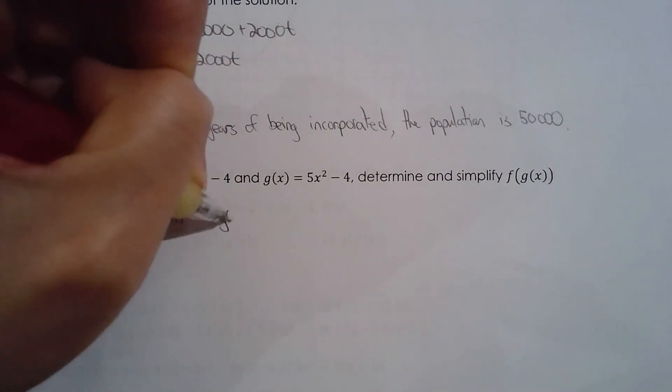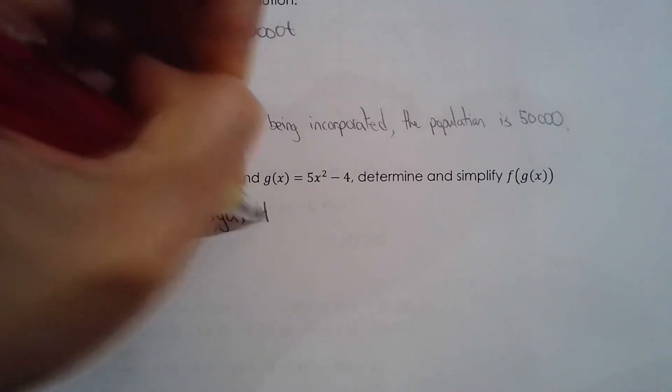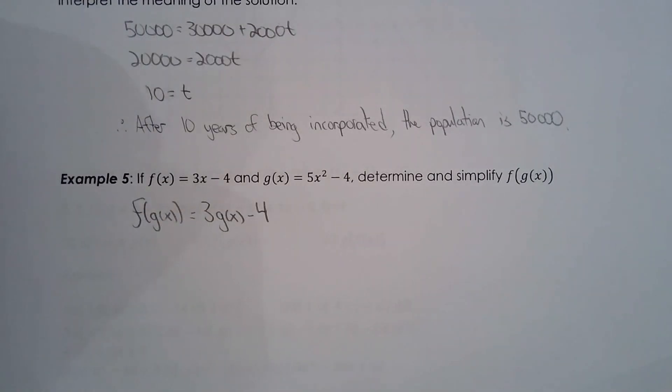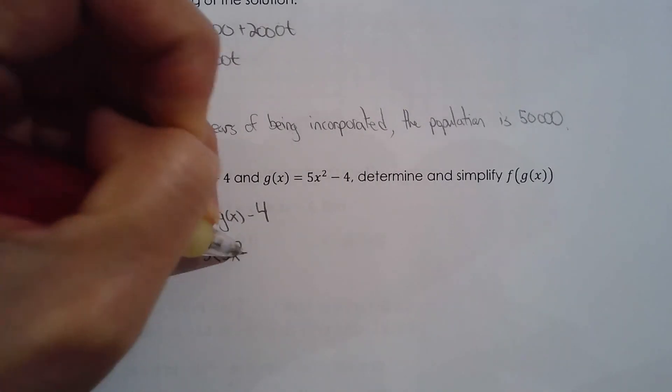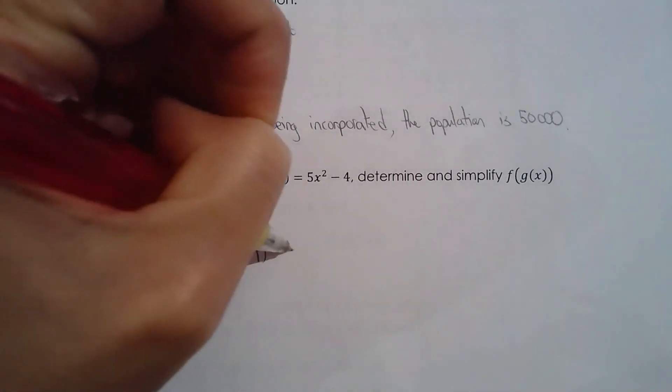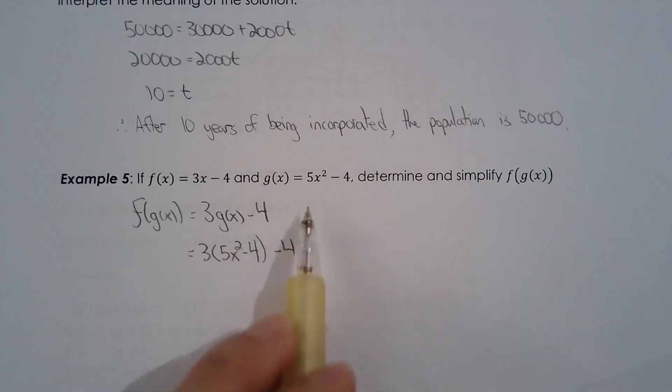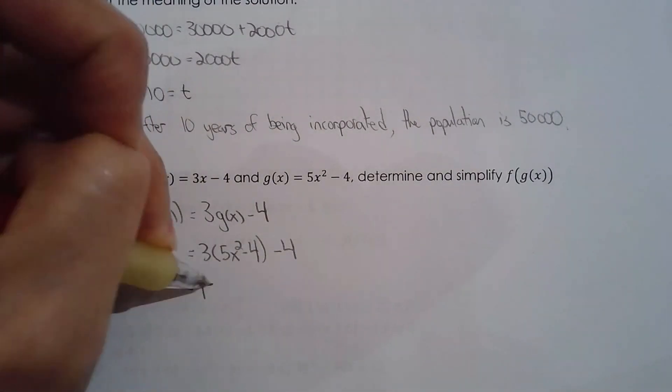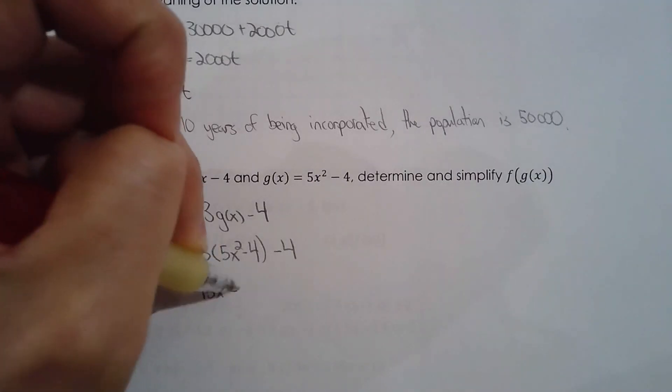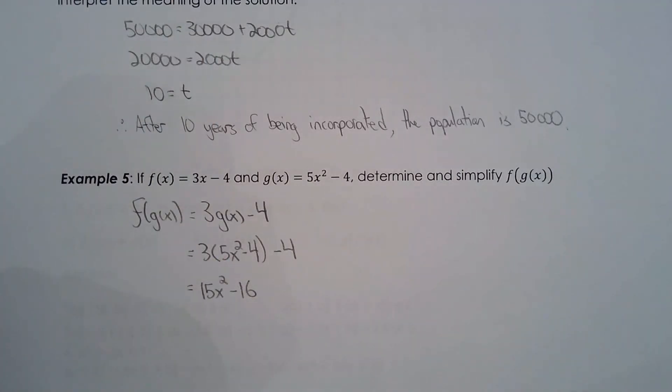But wait a minute, what is g of x? g of x is 5x squared minus 4. So since we know g of x, we can just substitute that. Anyways, distribute the 3, so 15x squared minus 12 minus 4, minus 16. And that's it, that's f of g of x.